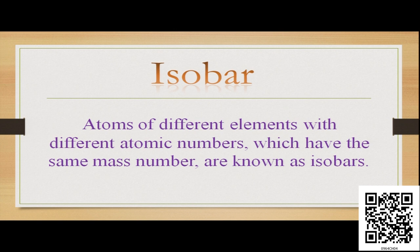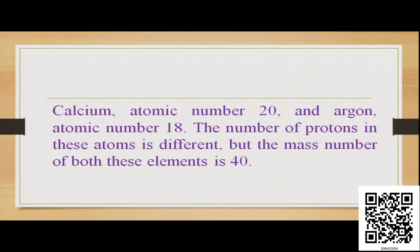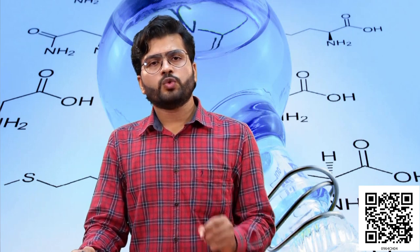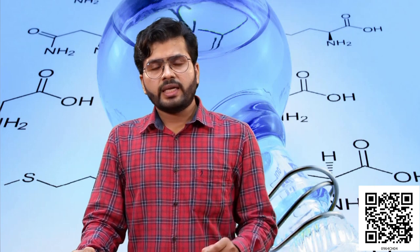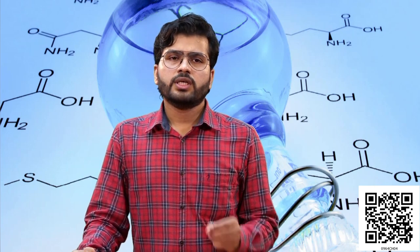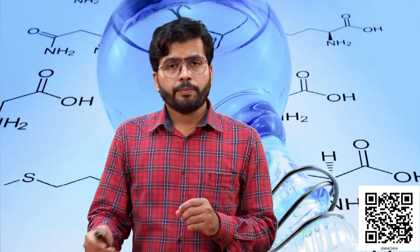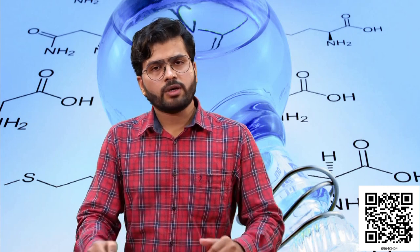Taking one example of such an isobar pair — calcium and argon. The atomic number of calcium is 20 and the atomic number of argon is 18, but for both atoms the mass number is the same — that is 40. That means: 40 minus 20 in case of calcium gives the number of neutrons as 20. But in case of argon, 40 minus 18 gives 22 neutrons. Because of this difference in neutrons, when you sum them with protons, it comes to the same mass number of 40. These types of species are called isobars.